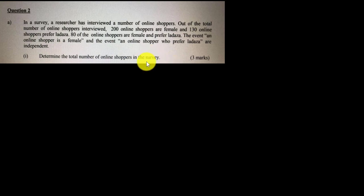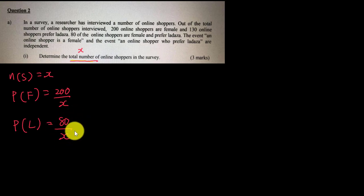I'll write down all the information I have. First, let the sample space be n(S). We don't know the total number, so I'll assume we have x number. The number of the sample space will be x. To find the probability of getting a female shopper, P(F) equals 200 over x. The probability of shoppers who prefer Lazada, P(L), will be 80 over x.